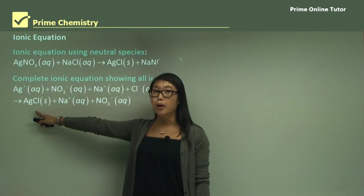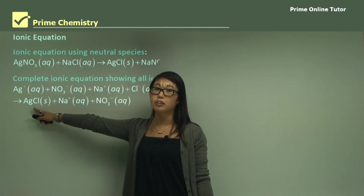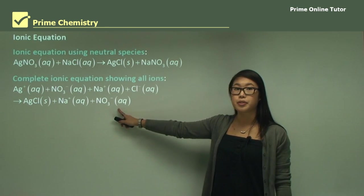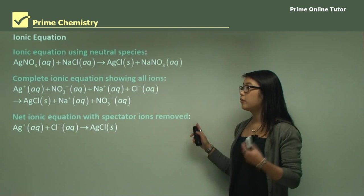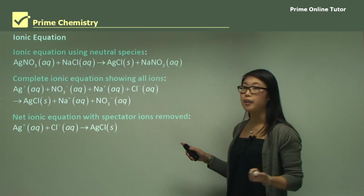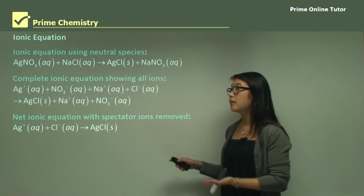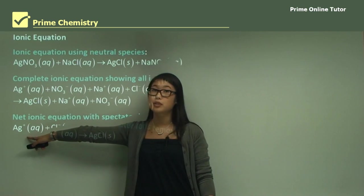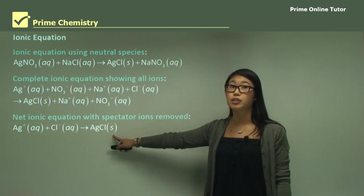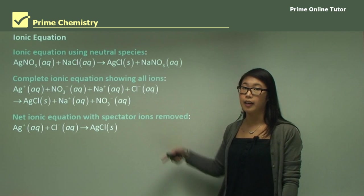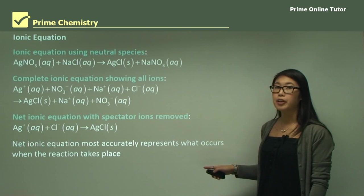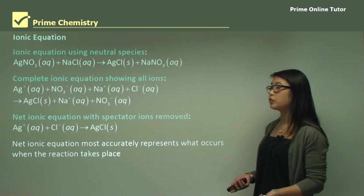On the other side of the arrow, we get the solid silver chloride, while the remaining ions sit in aqueous solution with positive and negative charges. We know there are spectator ions in there. A net ionic equation means we don't include the spectator ions. So the overall key equation is: silver in aqueous solution plus chloride in aqueous solution forms the precipitate — silver chloride in solid form.